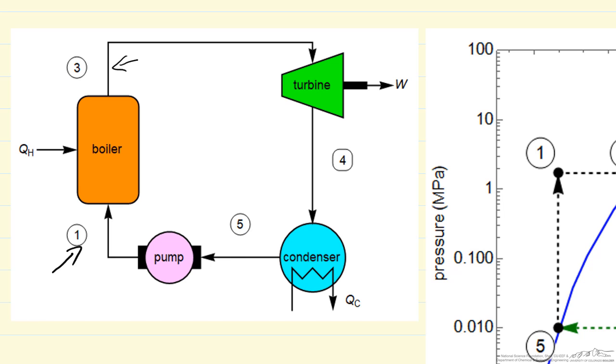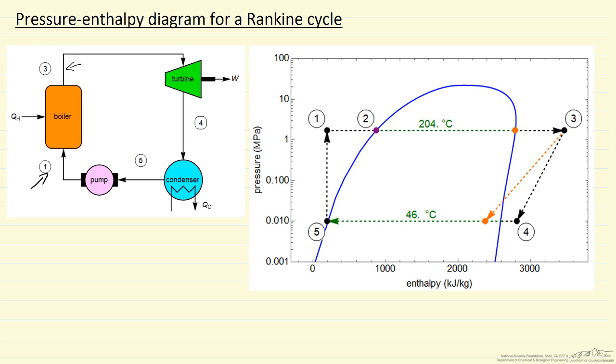So to understand the behavior, let's look at this log of pressure versus enthalpy diagram. And so point 1, here it's a liquid at high pressure. This is where it enters the boiler, raise the temperature up to where it starts vaporizing.